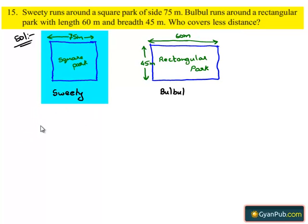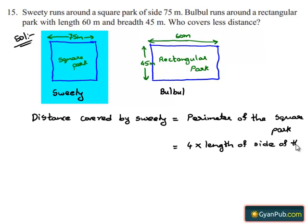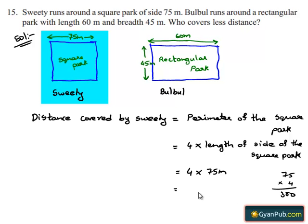First, we have to find the distance covered by Sweetie, which is equal to the perimeter of the square park. This is equal to 4 times the length of side of the square park, since we know that perimeter of a square is 4 times its side. This is equal to 4 times 75 meters. Multiplying 75 with 4, the distance covered by Sweetie is 300 meters.